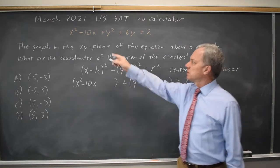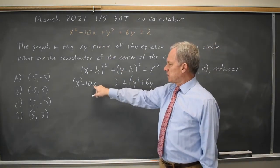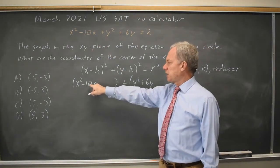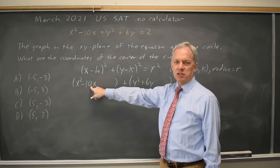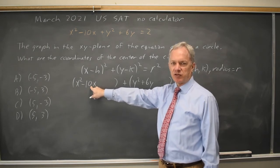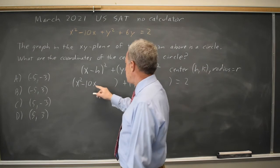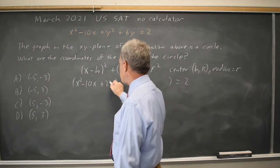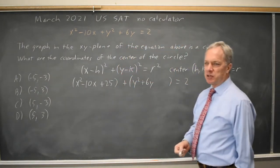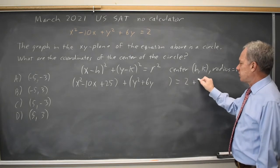To complete the square where I have the x terms here, I take half of the linear coefficient, so half of -10 is -5, and I square that: (-5)² is positive 25. Since I add 25 on the left, I'll add 25 on the right.